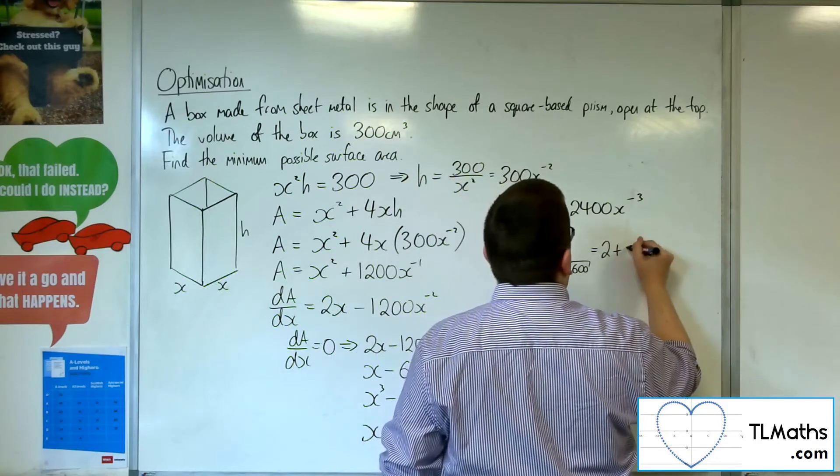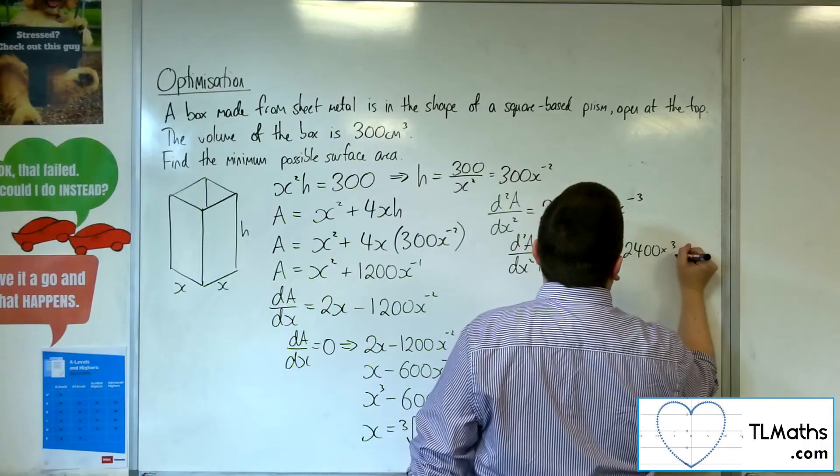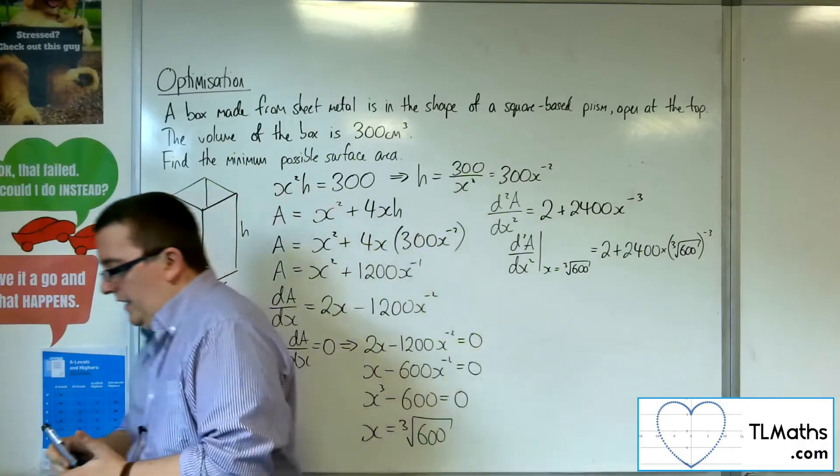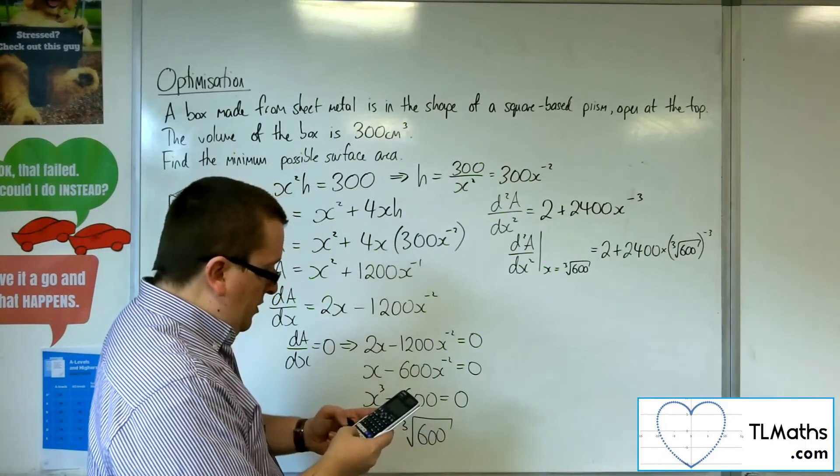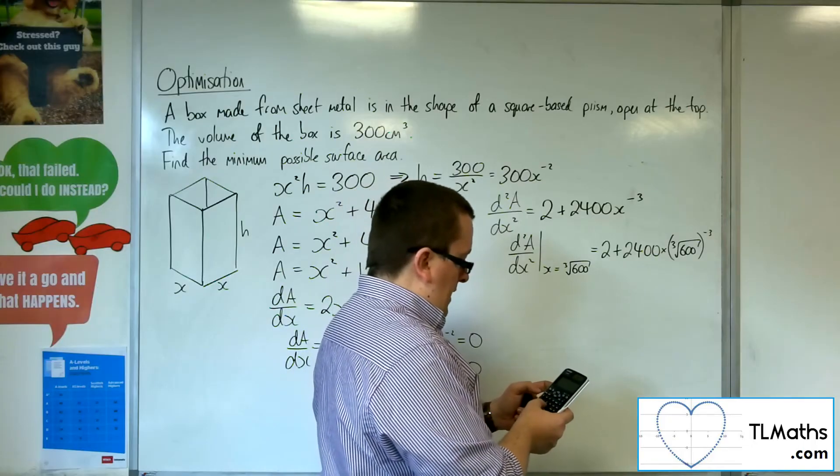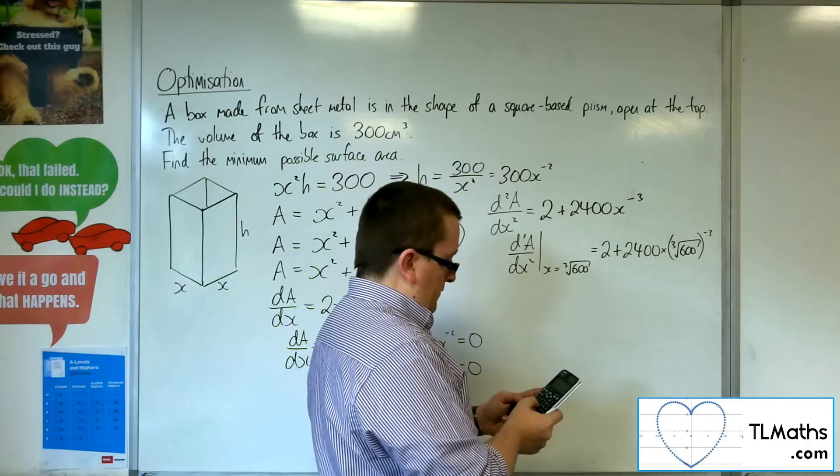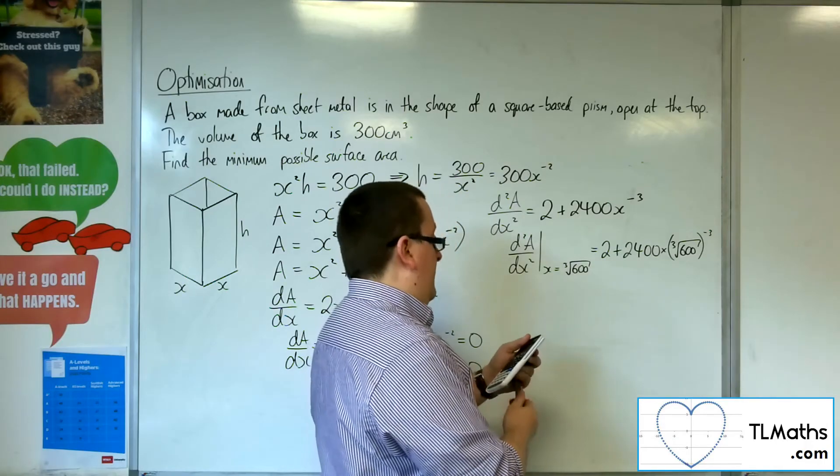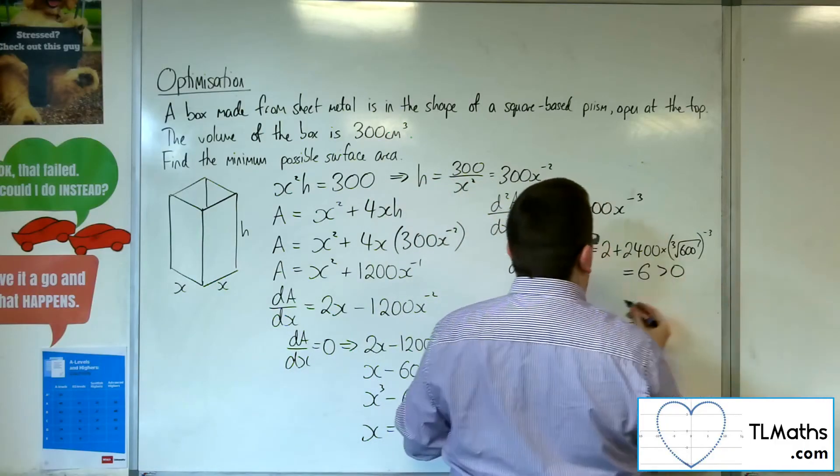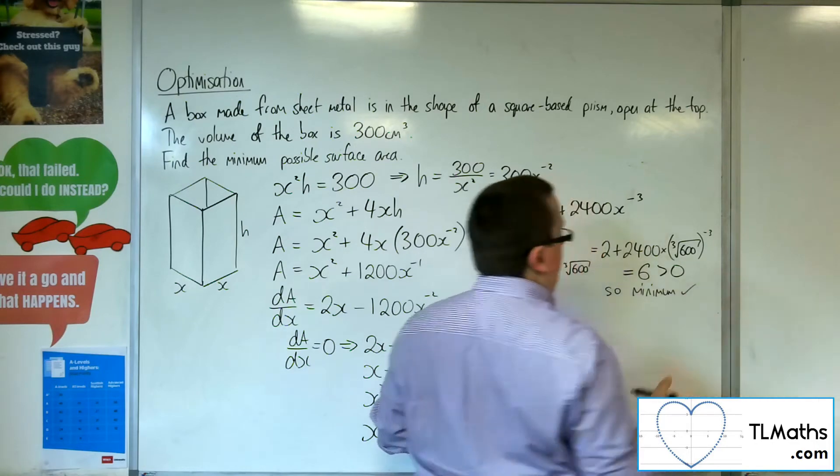Okay, so I get 2 plus 2400 times the cube root of 600 to the minus 3, which is clearly going to be a positive value. So 2 plus 2400 times the cube root of 600 to the power of minus 3, and I get 6, which is greater than 0, so it's a minimum, as we wanted.